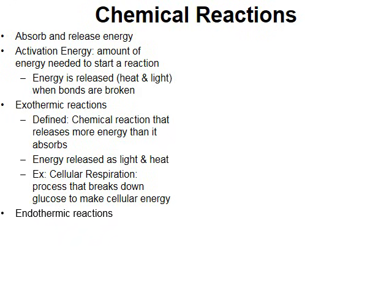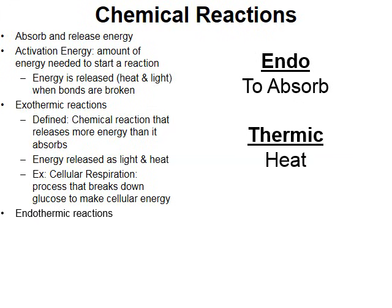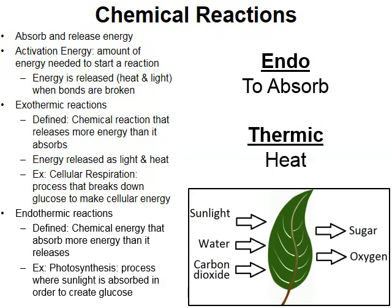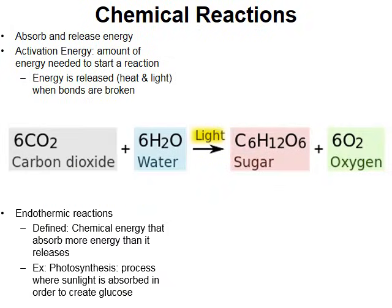The opposite is endothermic reactions. Endo is a prefix that means to take in or absorb, and thermic implies heat, so an endothermic reaction is a chemical reaction that takes in or absorbs more energy than it will release. A great example is photosynthesis. Photosynthesis takes in sunlight energy to create sugar and glucose that the plant uses for food. The general formula shows that carbon dioxide, water, and sunlight energy are used to produce sugar and oxygen. This is why photosynthesis is an endothermic reaction — sunlight is taken in to help jumpstart the process.